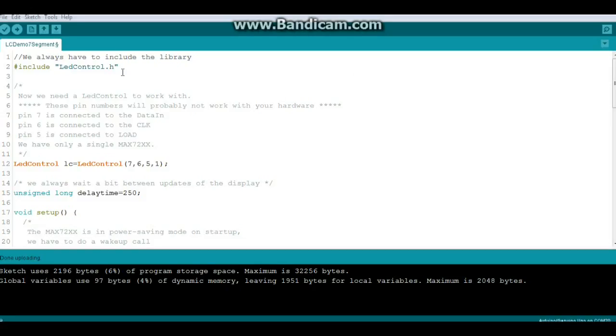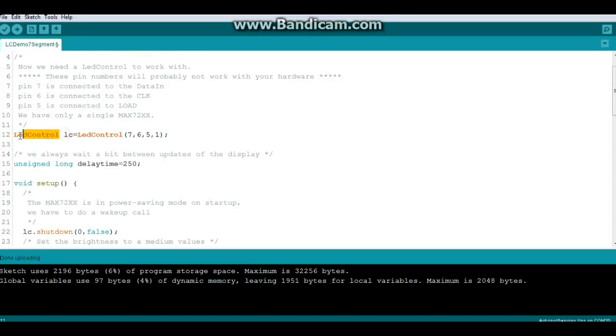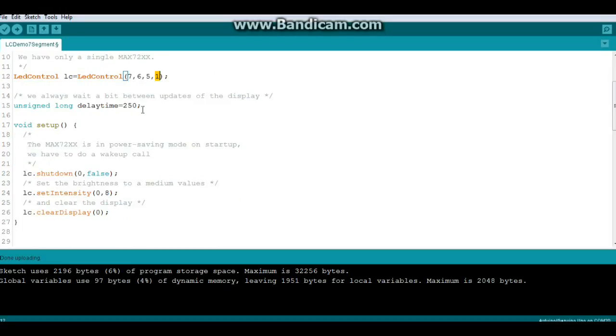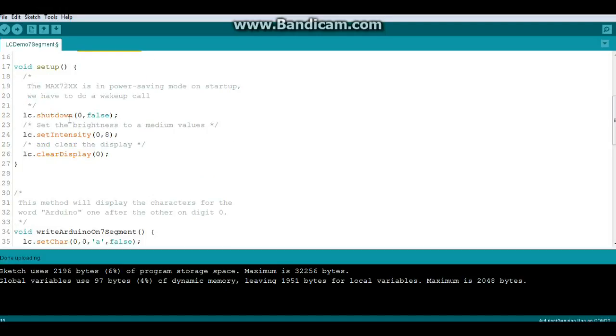Here's a quick look at our code. We have one include, that is the LED control library. Then we need to create an instance of LED control which we're going to call LC with these arguments: our data in, our clock, our load or CS, and the number of MAX7219 chips we're using. Next we need to wake up the display, so LC.shutdown, number of display.